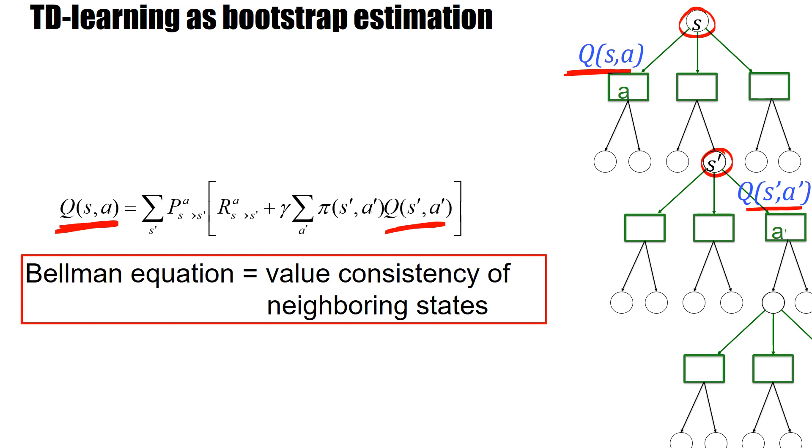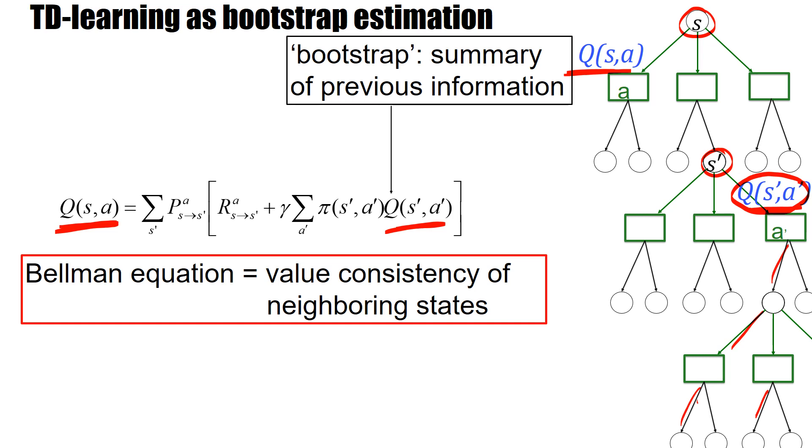Now imagine that this Q value here is a good approximation of what's happening down there in the graph. The idea is that these TD learning algorithms, such as SARSA and others, have a bootstrap approach. They use this summary of previous information that's represented by Q of S prime A prime to update the Q values in the state further up. That's the first aspect.